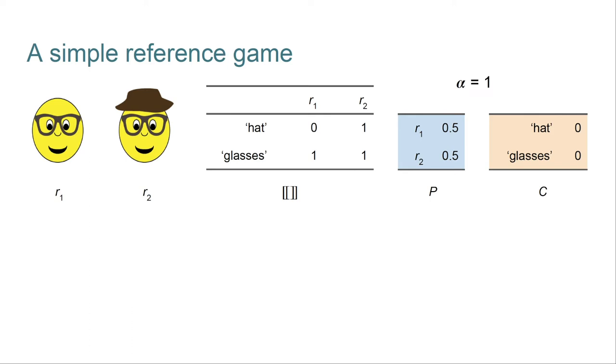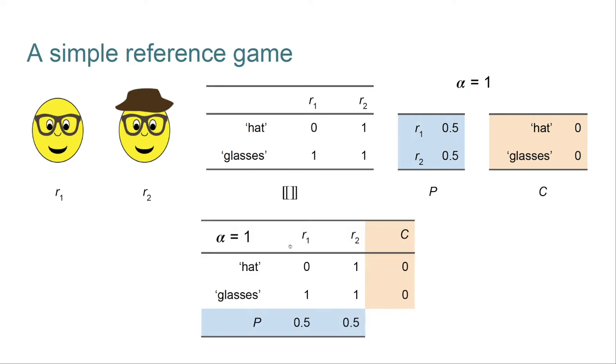The final ingredient is the alpha parameter. I'll say a lot more about what it does later. For this screencast, I'm going to depict reference games in the compact way that you see at the bottom of the screen here. In the middle we have the truth conditions, the semantics. The prior over referents is in the bottom row. The costs are given in the final column, and the alpha value is stashed up here in the corner. The final thing I'll say about this reference game is that it has the potential for the implicature that we just walked through informally. The speaker should choose glasses for R1 and hat for R2, and the listener should make corresponding inferences. This isn't encoded in the truth conditions, which make glasses equally true of both referents, but we'll see that it emerges from pragmatic reasoning.